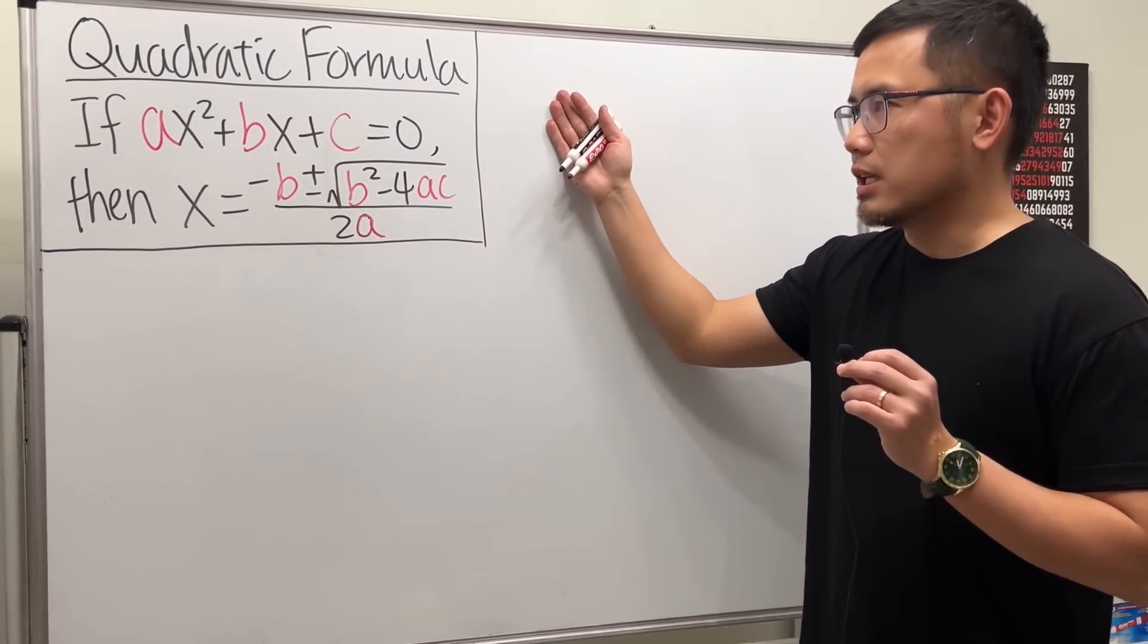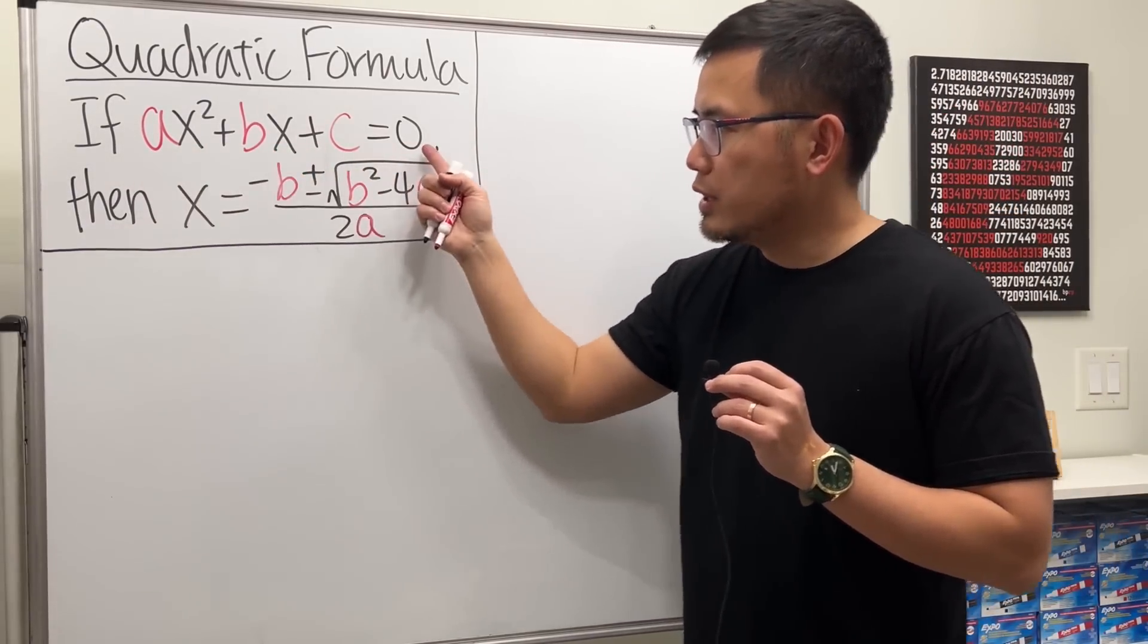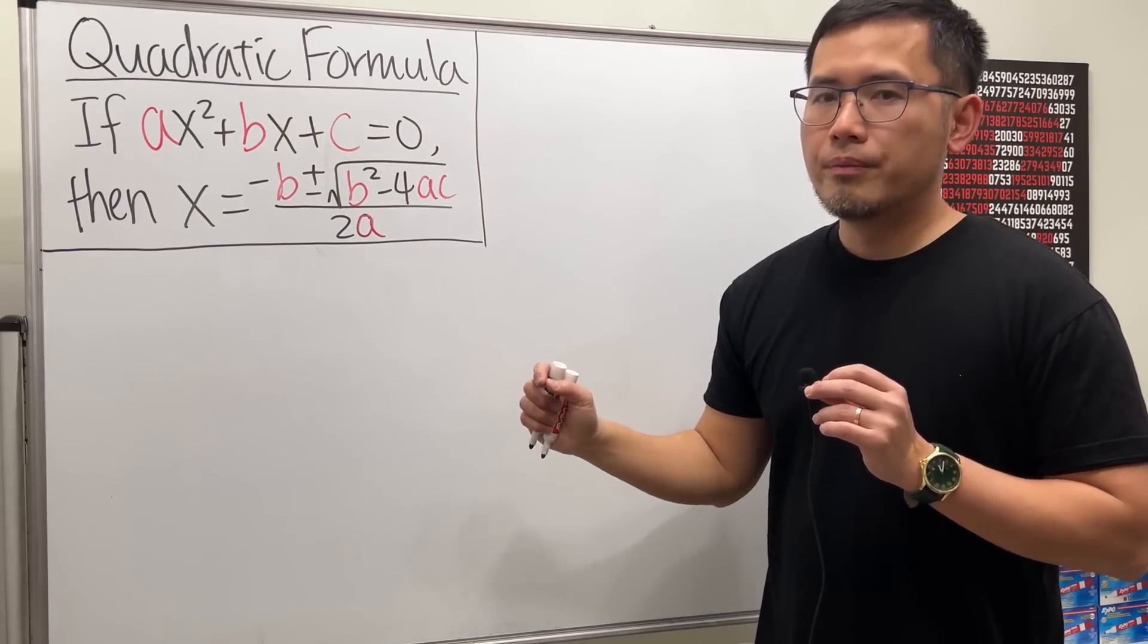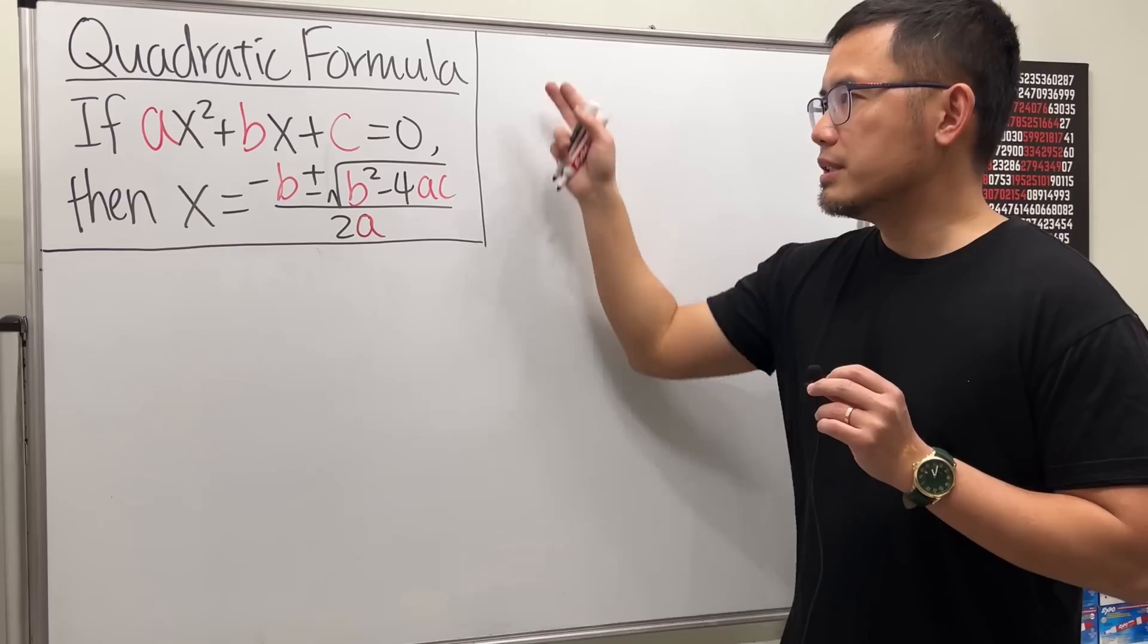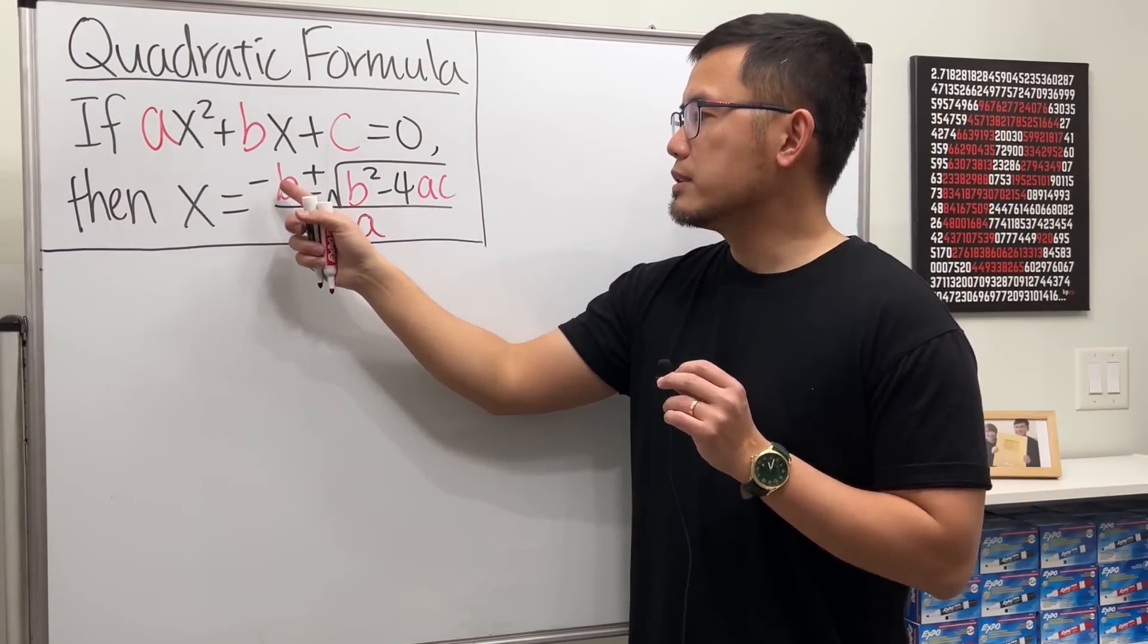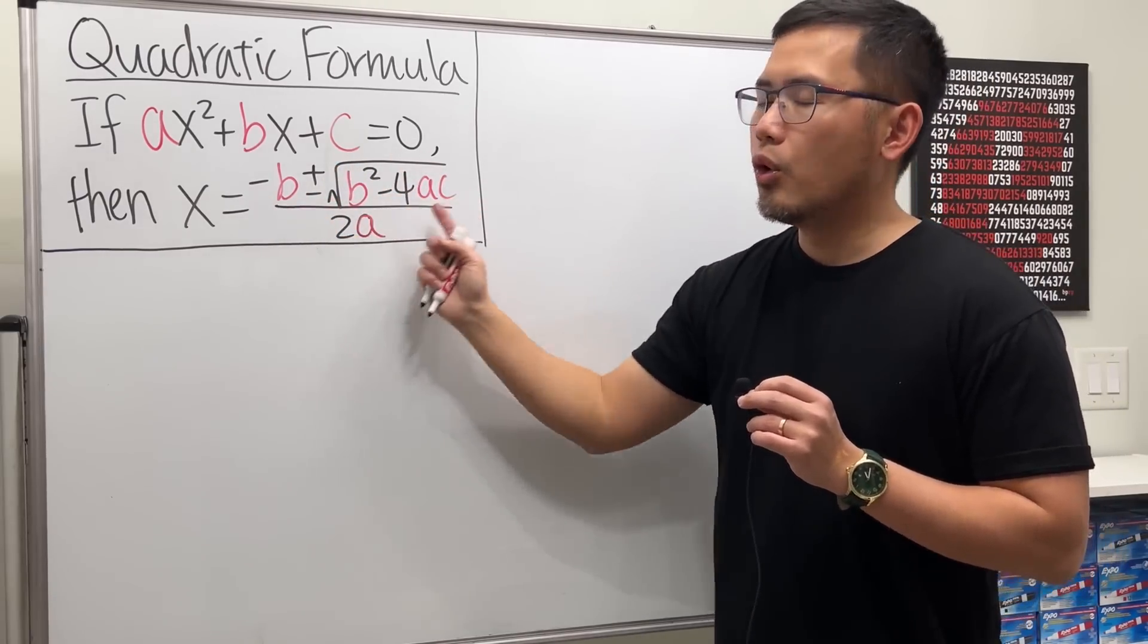But before that, let's review the classic quadratic formula, which is for the standard form of a quadratic equation, ax squared plus bx plus c equals 0. Then, we can always use the quadratic formula to solve for x, which says x equals negative b plus or minus square root of b squared minus 4ac all over 2a.